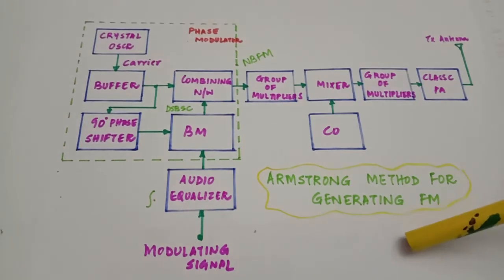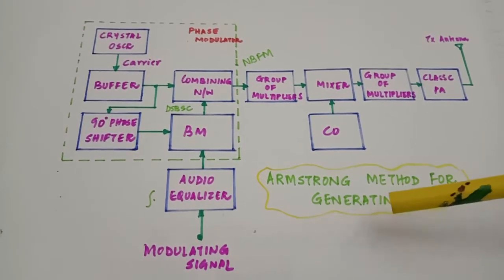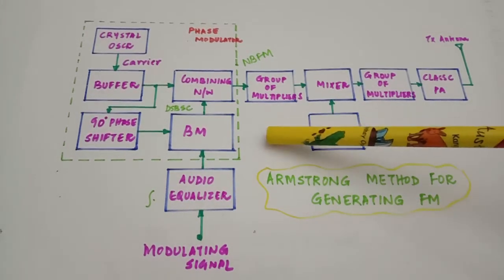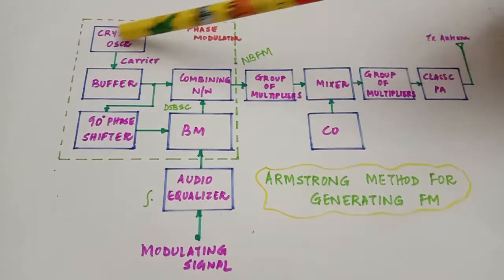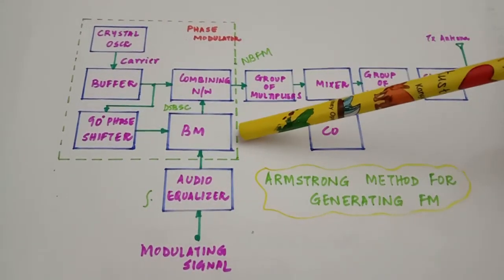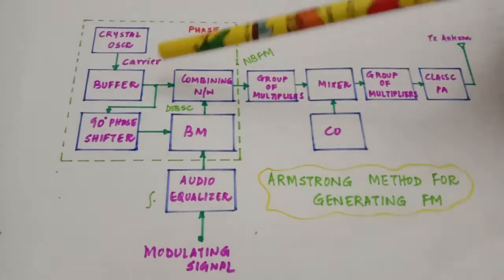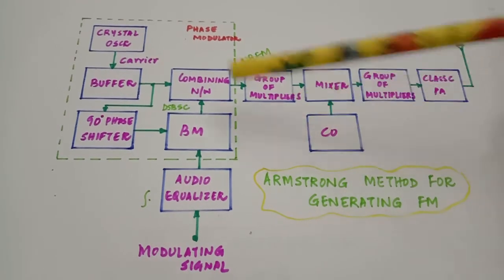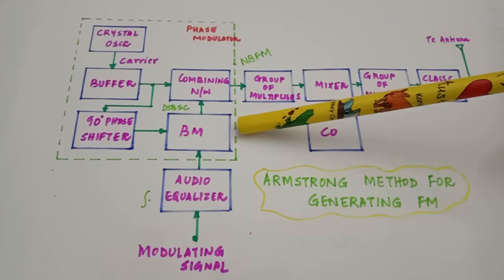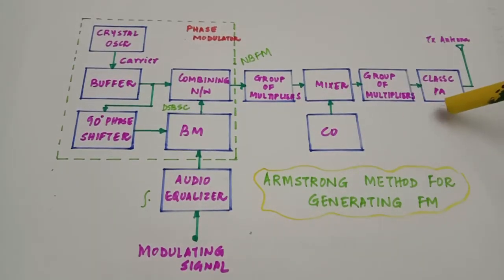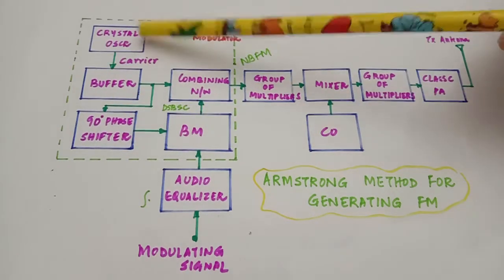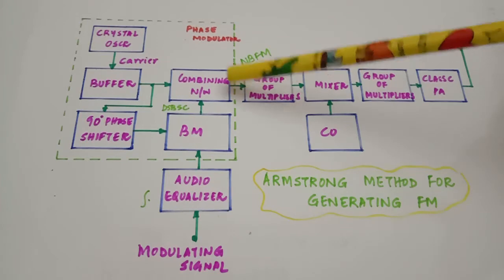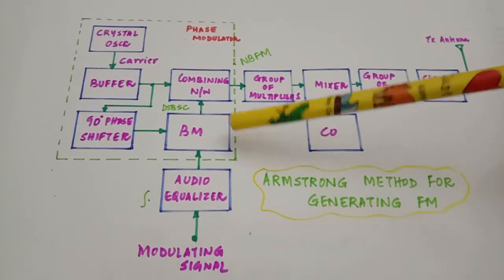This is the block diagram for the Armstrong method for generating FM. It is an indirect method and phase modulation is used for generating a frequency modulated wave. The blocks shown in the green box are responsible for generating the phase modulated output. We shall explain this whole block diagram in two stages. In this block we find that we have a balanced modulator, a 90-degree phase shifter, a crystal oscillator, and a combining network.